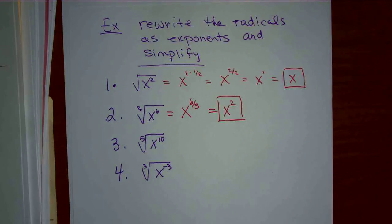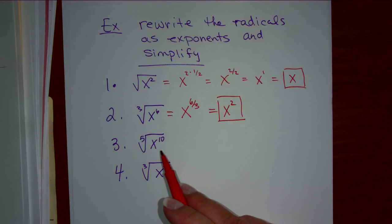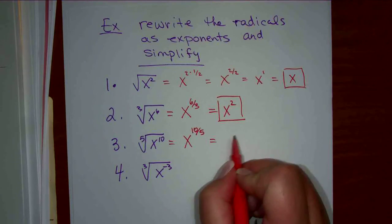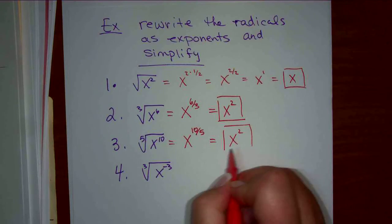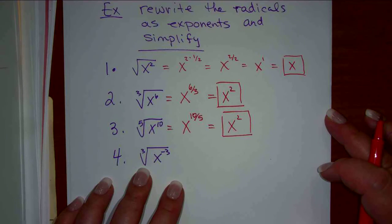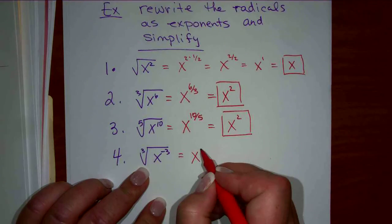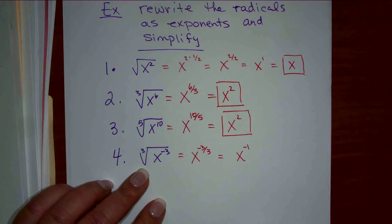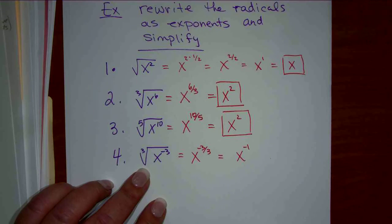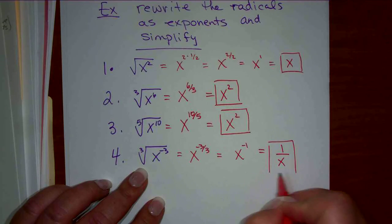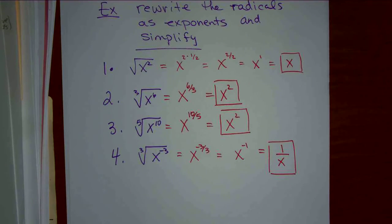What about a negative exponent? Same thing — this would be x to the negative 3 over 3. And 3 over 3 is 1, so this is x to the minus 1. How do we write x to the minus 1? 1 over x. So we're going to stop there for today — we're going to do more with square roots and exponents next class and we'll be done that section.